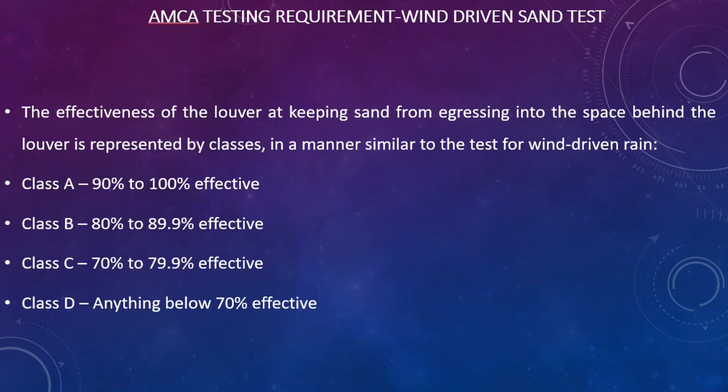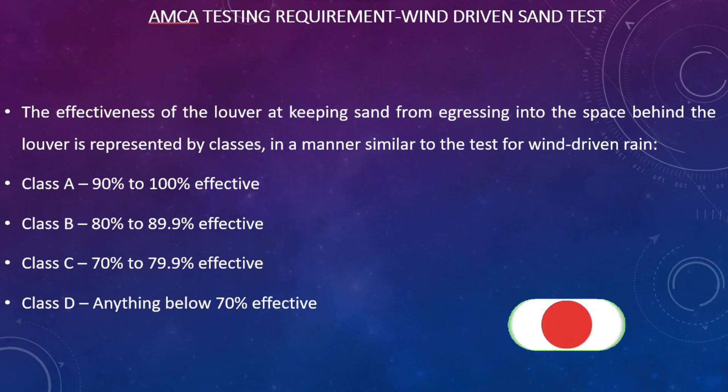After the sand rejection effectiveness, there is one very important thing to consider during selection: the pressure drop. For the same size — for example, a 1000mm by 1000mm sand trap louver — different manufacturers will come with different pressure drops. But it is good engineering practice that the pressure drop of the sand trap louver should not exceed 50 Pascal. We must select a louver with a pressure drop lower than 50 Pascal, and also consider the sand rejection effectiveness.